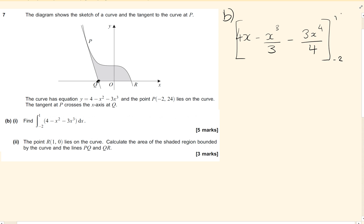Now it's important to take your time here and make sure you don't make any slips with your fractions. So I've got 4 lots of 1 minus 1 cubed over 3 minus 3 lots of 1 to the 4 over 4, and I'm going to subtract from that, putting minus 2 in.